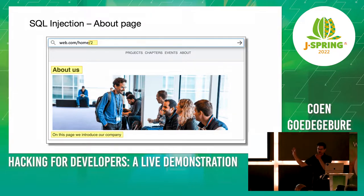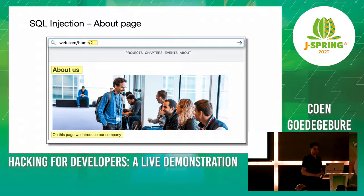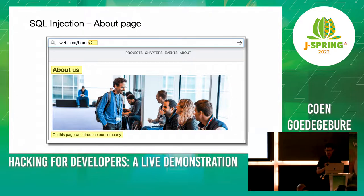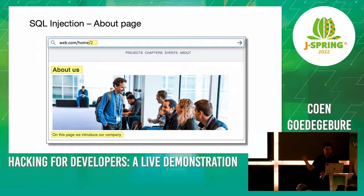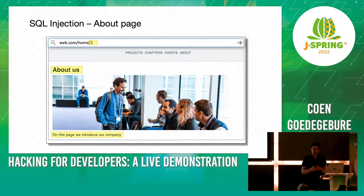Consider a URL like web.com/home/2 — that means there's a request with parameter 2, that requests page number 2 from the database and gets back, for example, the title or content of the 'About Us' page. In the browser you see the SQL statement being formed, then the database takes out the information, and the website displays it. Starting with the value 2, the SQL query looks like: SELECT page_id, title, content FROM pages WHERE page_id = 2, and the database returns row 2.